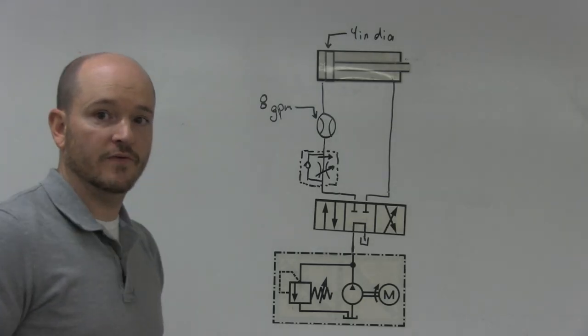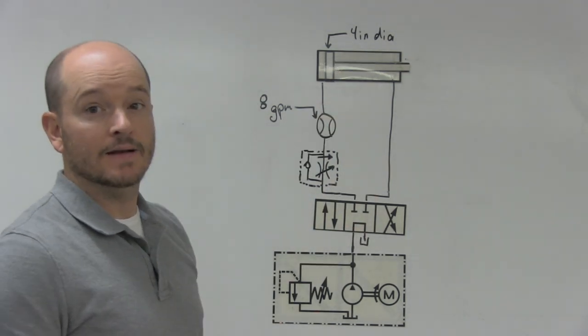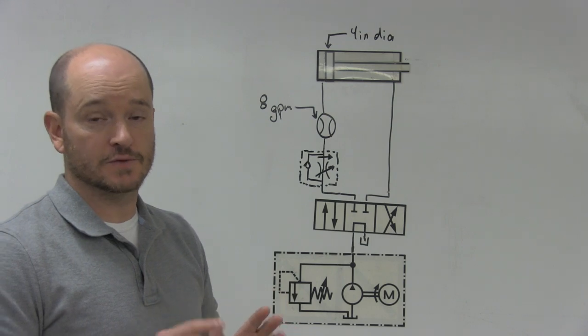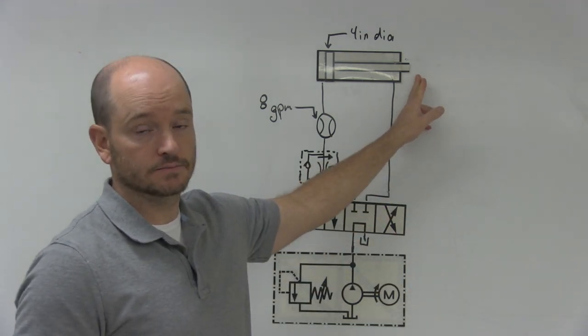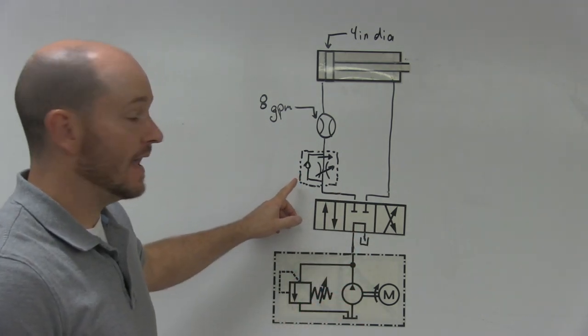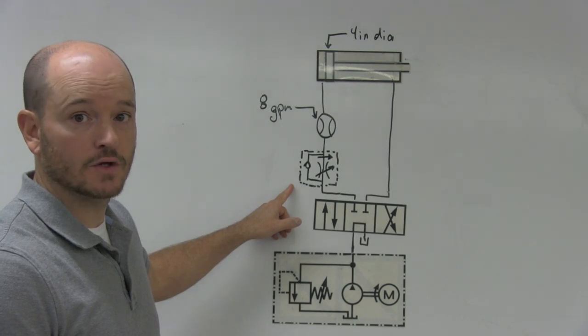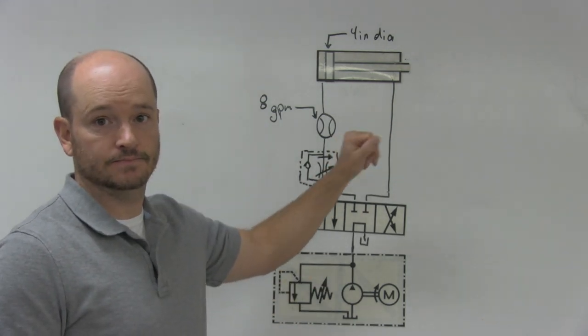In this video, we're going to focus on calculating the speed of a cylinder. Now we're going to start off with one of two assumptions. One, there's essentially no load on the cylinder. Or, if you have a varying load, that you have a pressure compensated flow control valve that will compensate for any variations in the load.